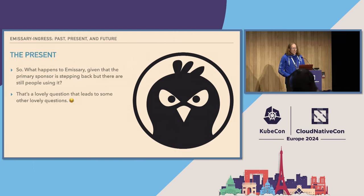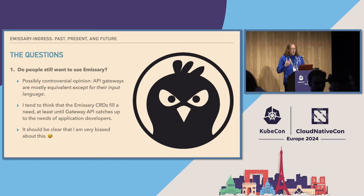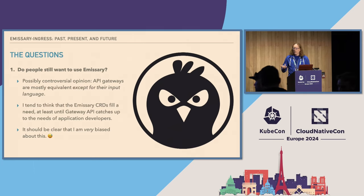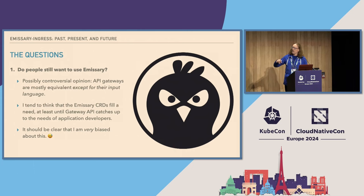This raises the fun question of: what happens to this project if the company that was primarily funding it is stepping back? And this gives rise to other questions like, do people still want to use this thing? This is particularly interesting because so many of you are new to the concept of Emissary. API gateways at this point tend to do fairly consistent things across implementations. What seems to matter a lot is the input language. I am biased about the input language for Emissary.